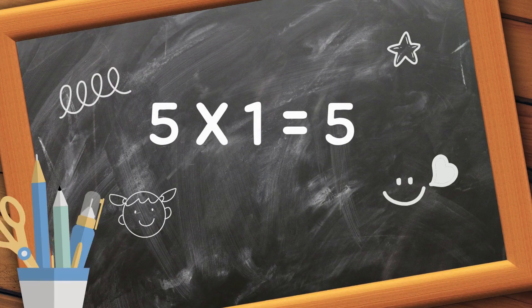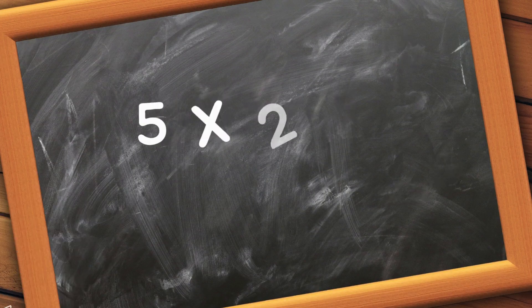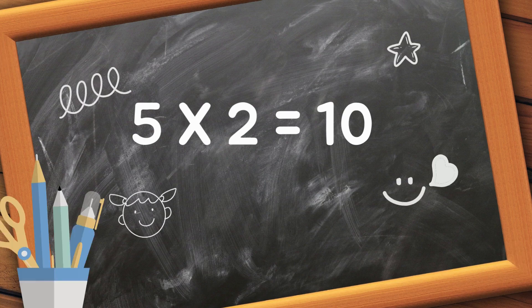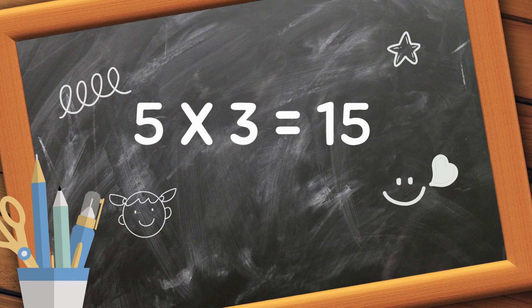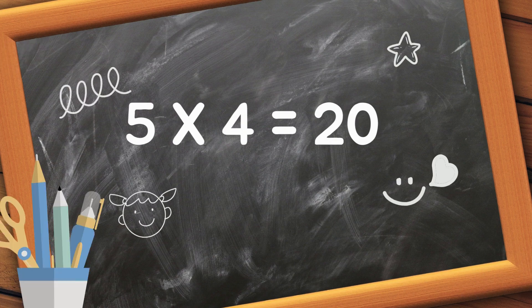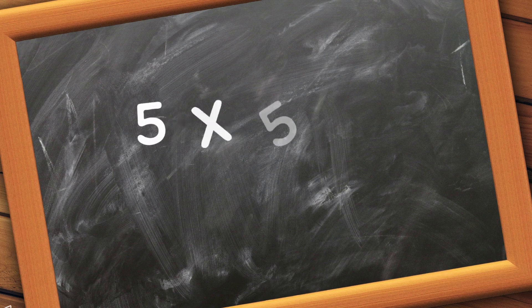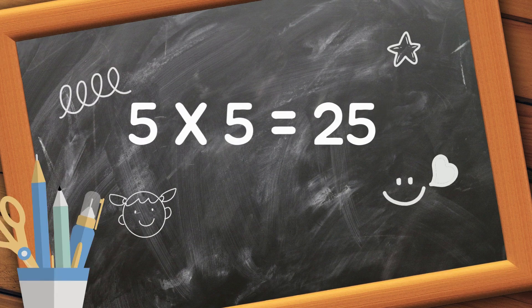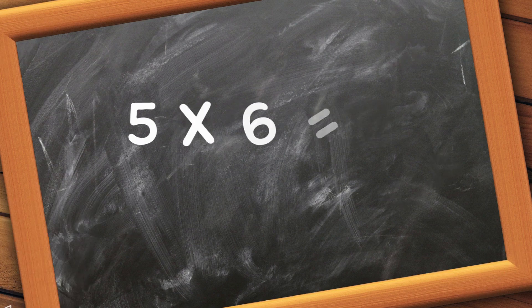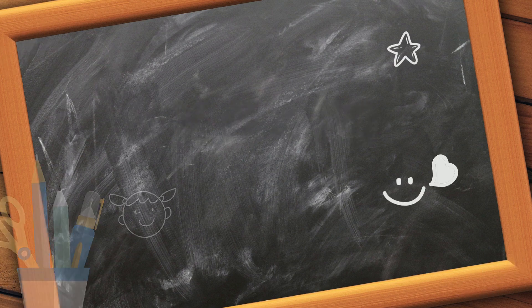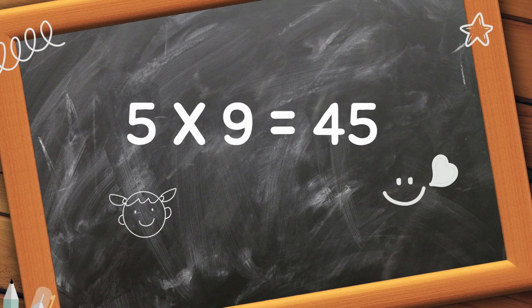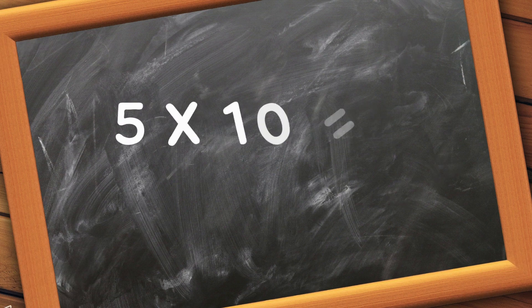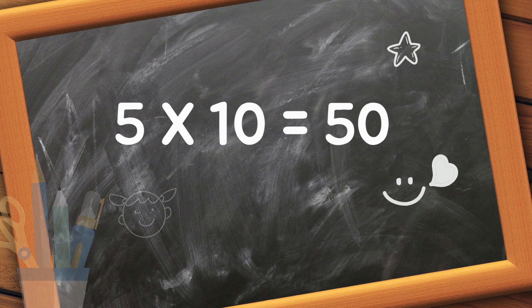5 1 is 5, 5 2 is 10, 5 3 is 15, 5 4 is 20, 5 5 is 25, 5 6 is 30, 5 7 is 35, 5 8 is 40, 5 9 is 45, 5 10 is 50.